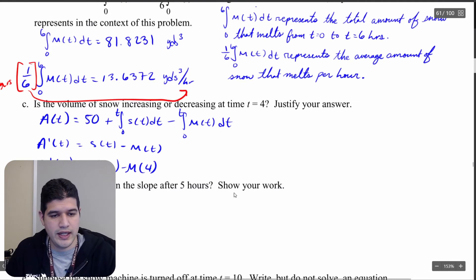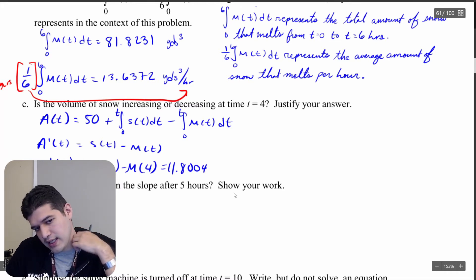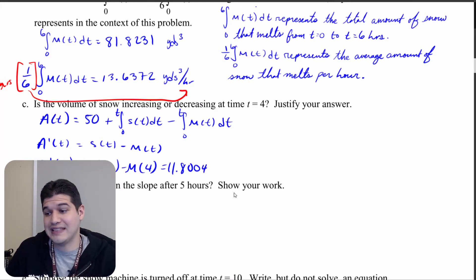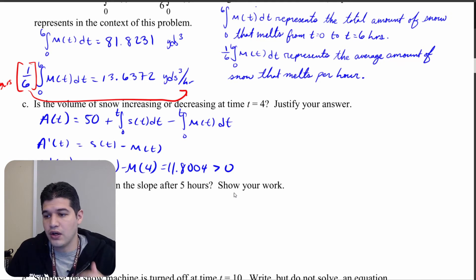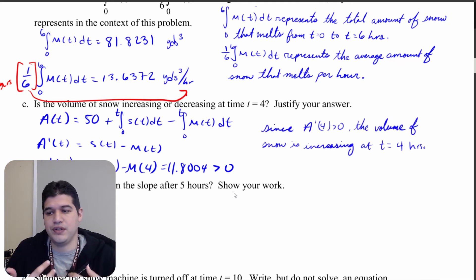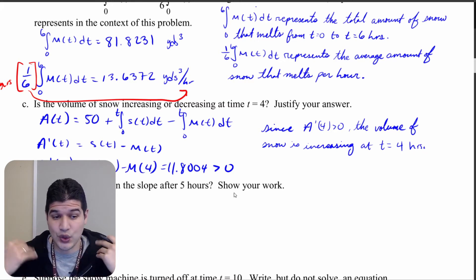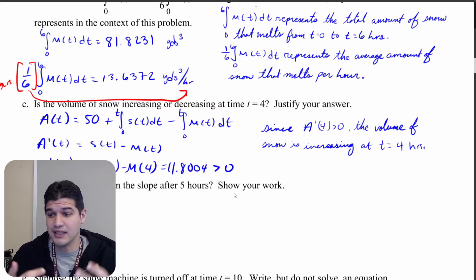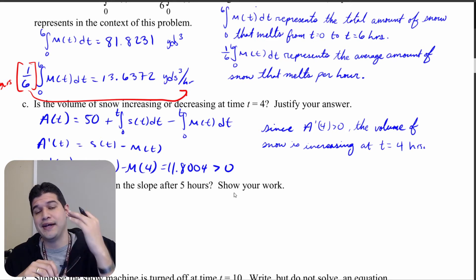When I calculate this I get 11.8004. This value is greater than zero — it's positive — so since the derivative of the total snow volume is positive, that means the volume of snow is increasing at time t equals four.